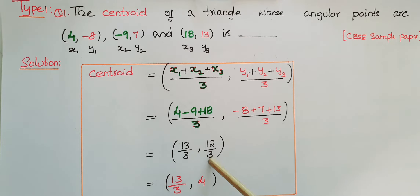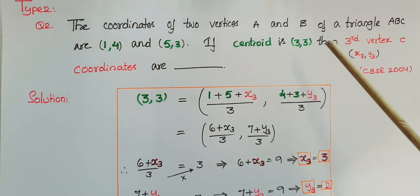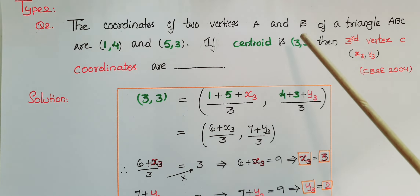That gives us 13/3 and 12/3. Since 12/3 = 4, the centroid is (13/3, 4).